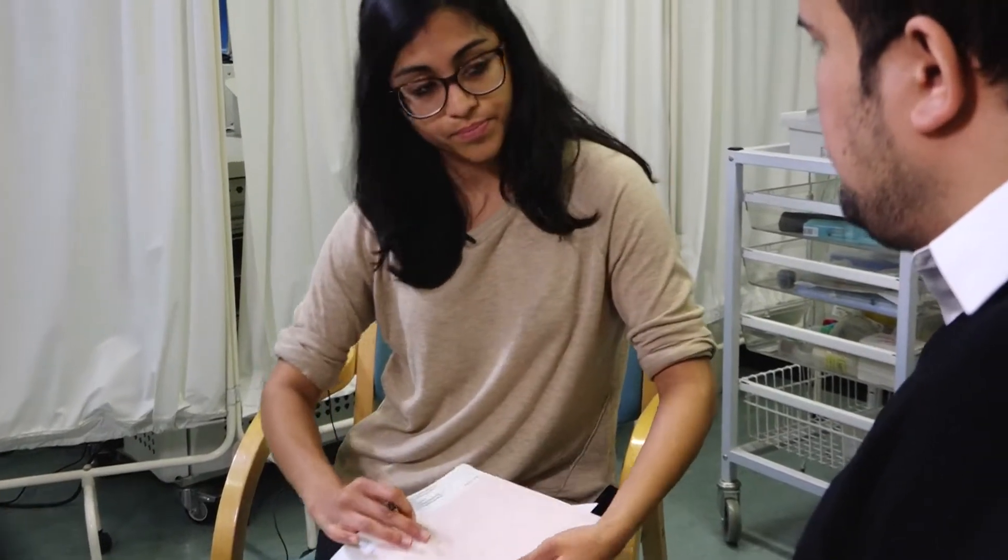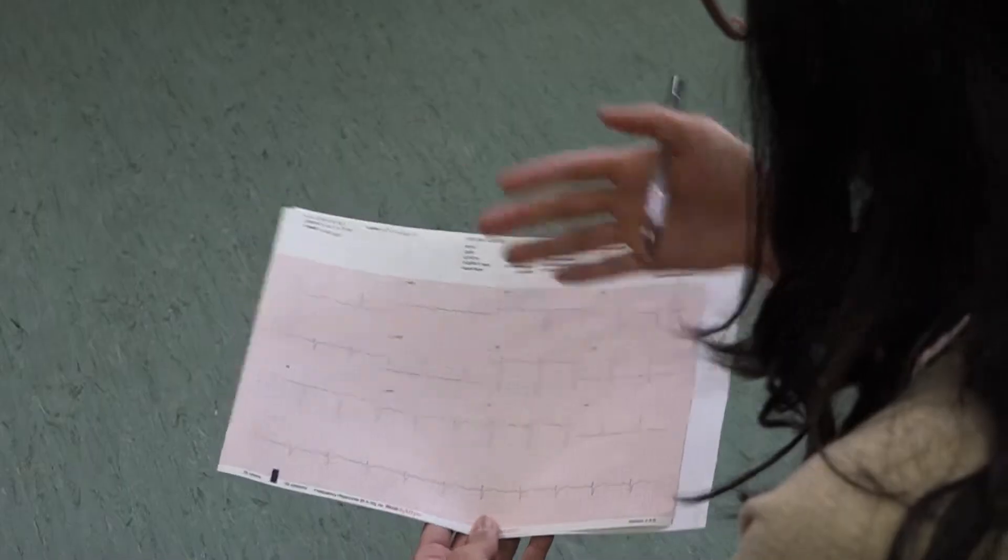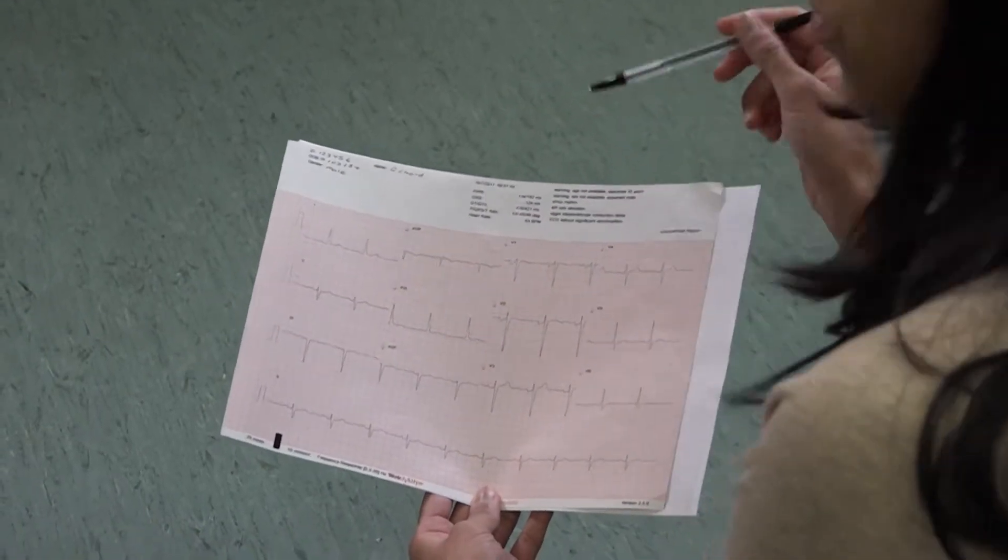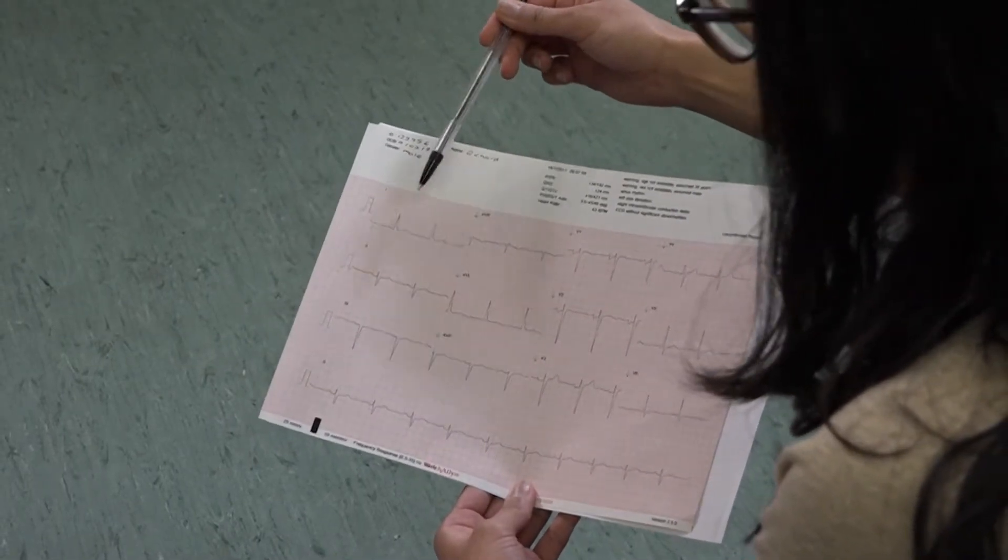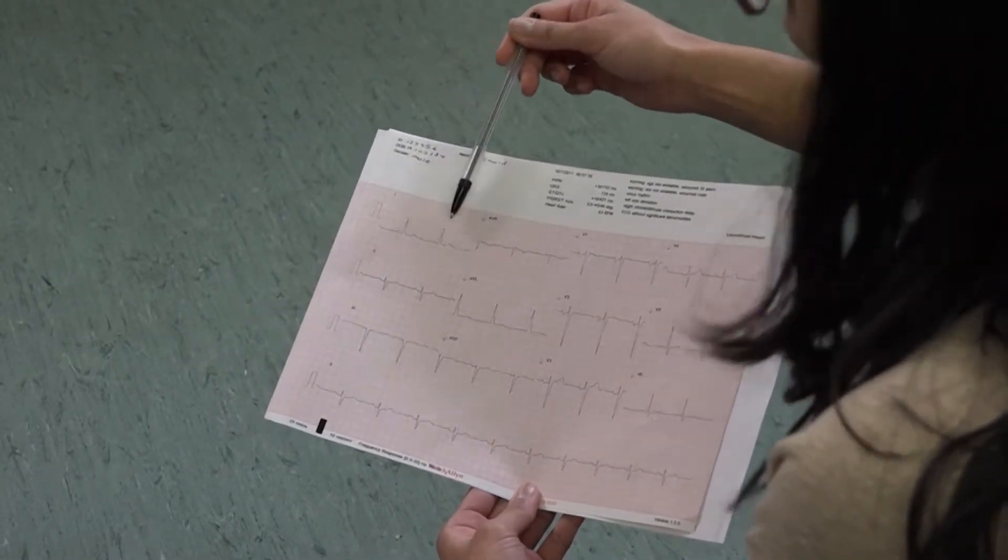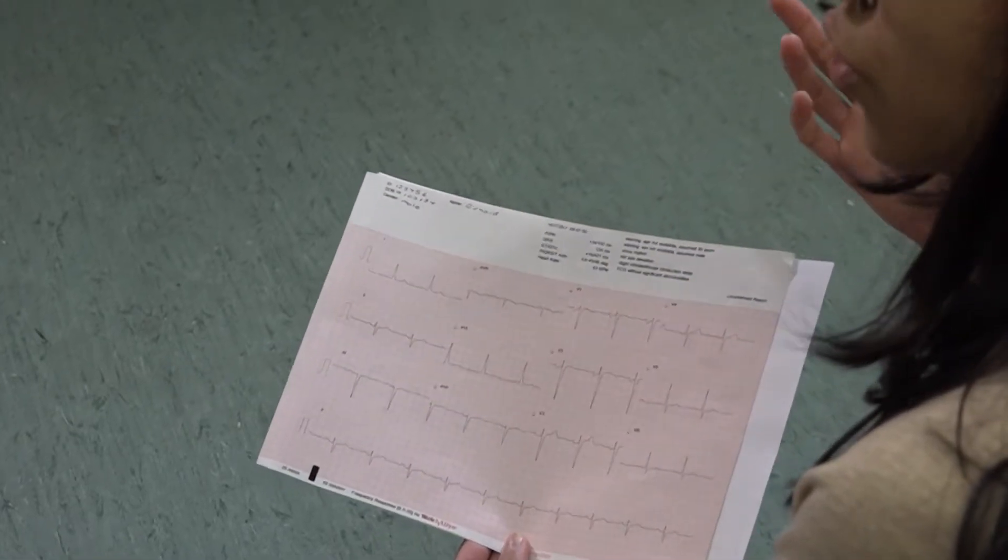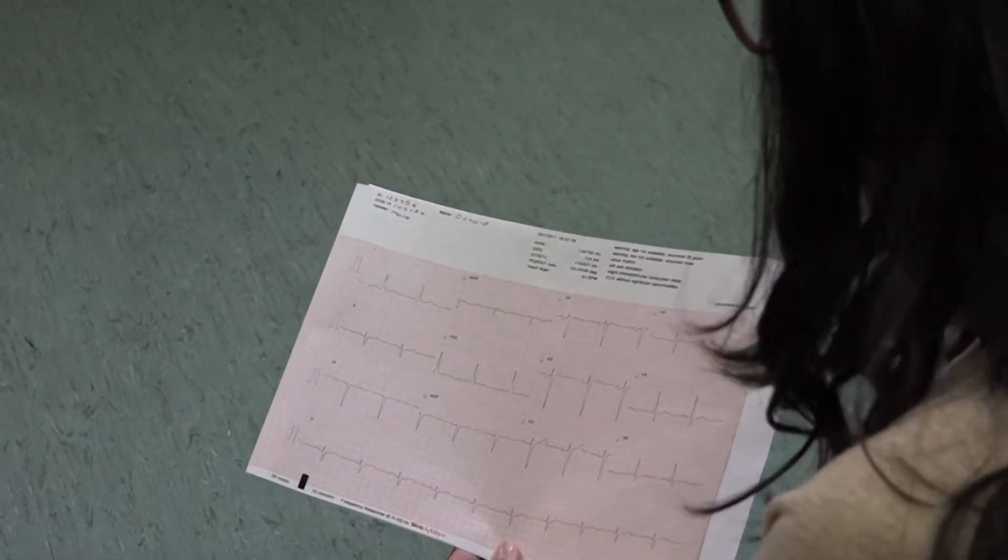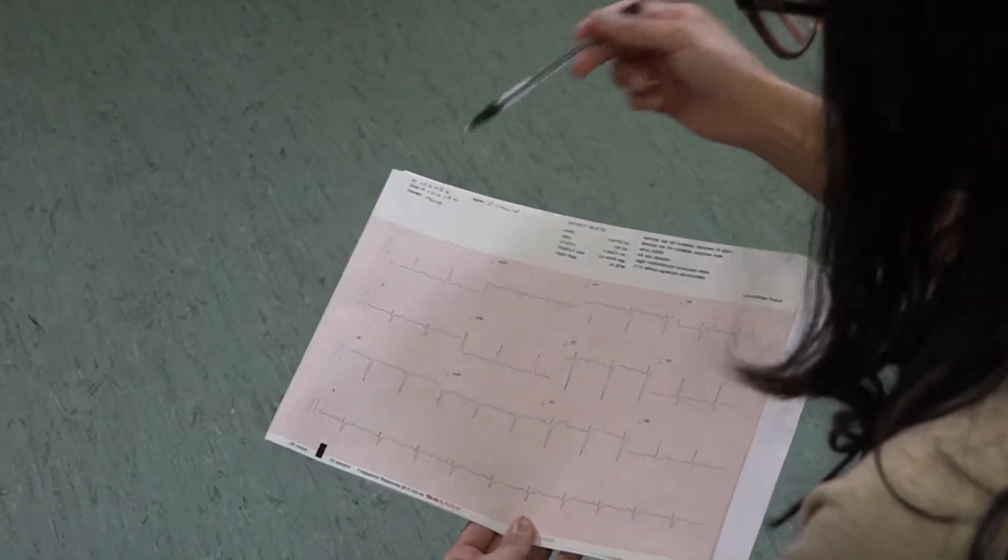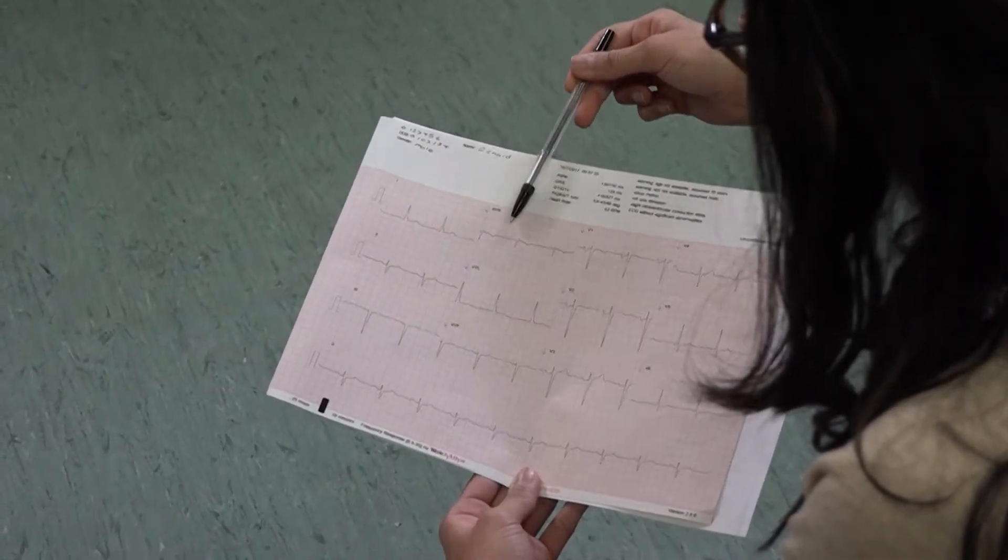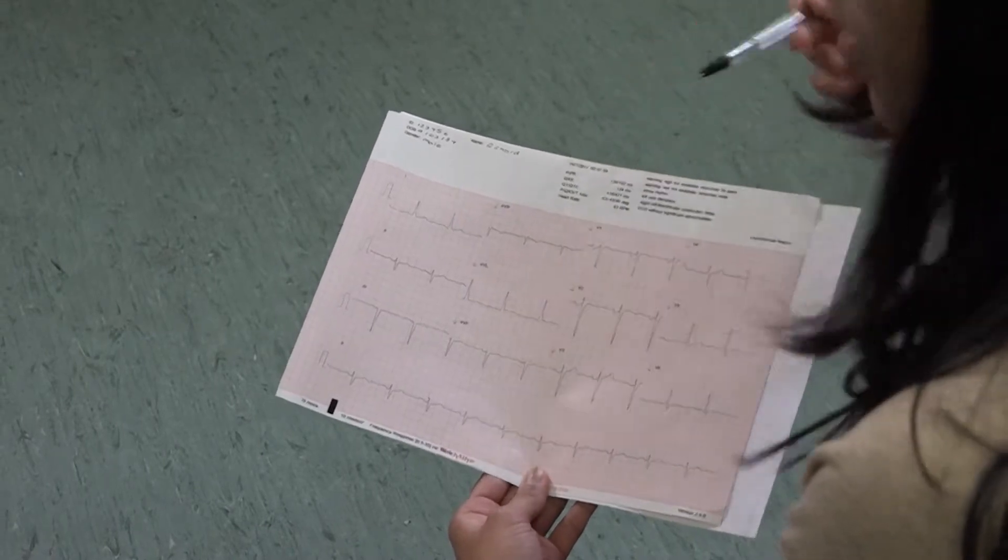And how would you determine the rate of the ECG? If your ECG is regular, the best way is to count the number of big squares between the QRS complexes and then divide 300 by that number. If your rhythm is irregular, the best way to do it is to count the number of QRS complexes on your ECG and then times that number by six.